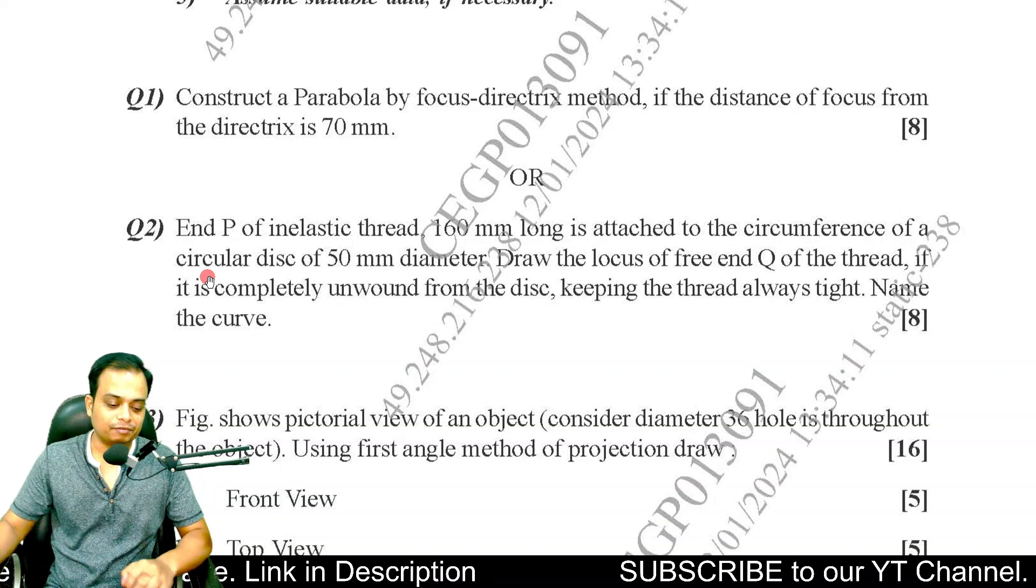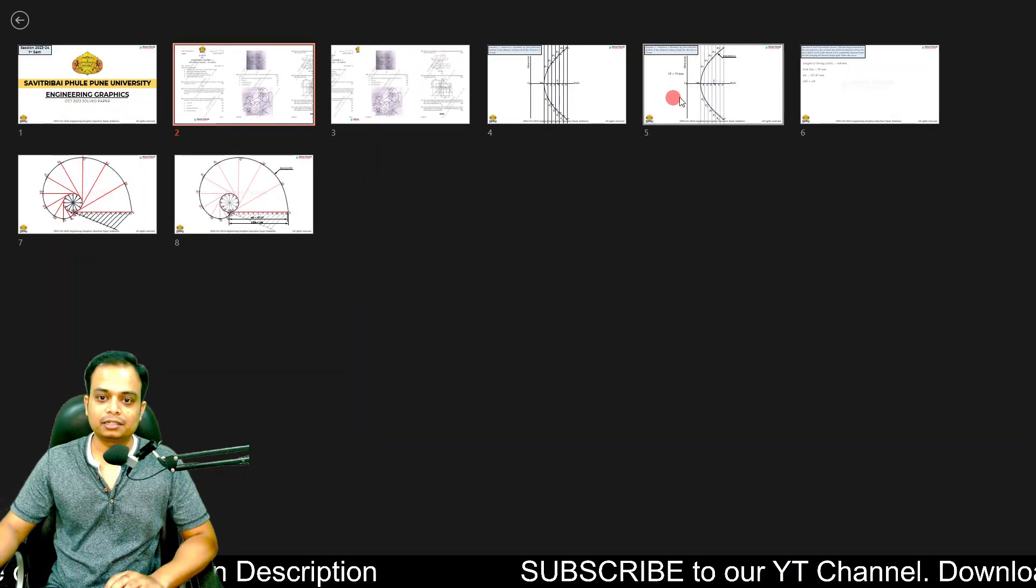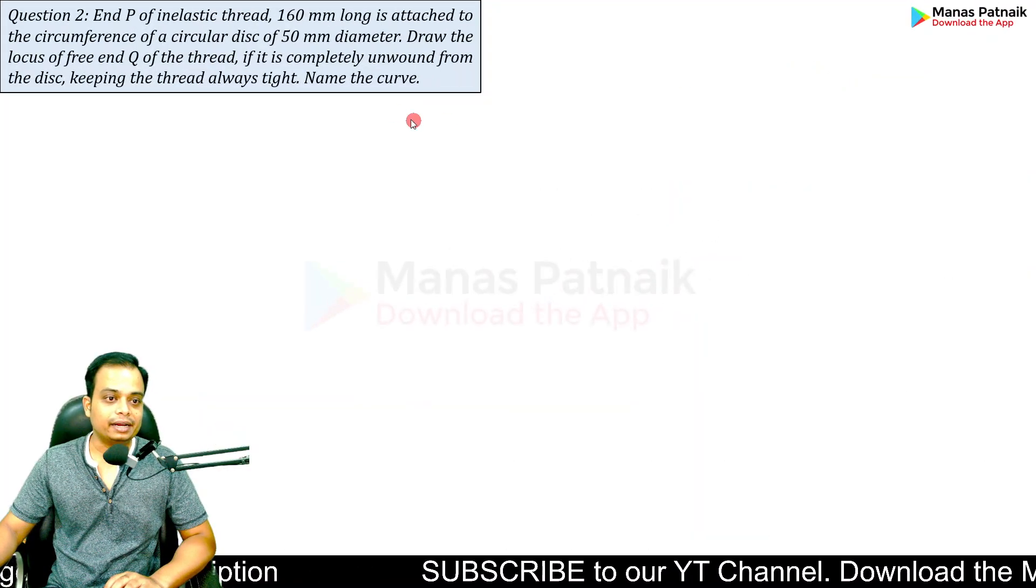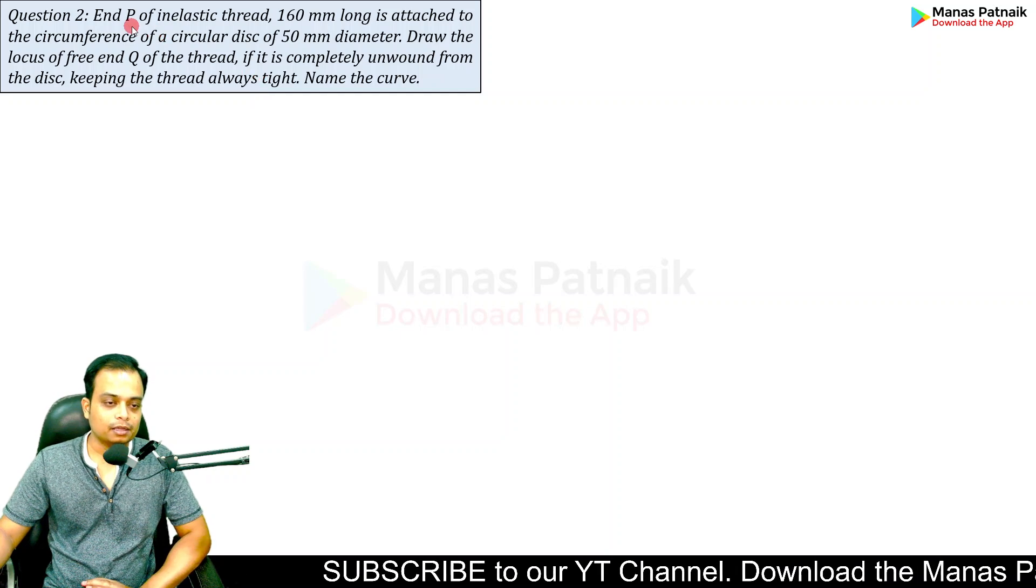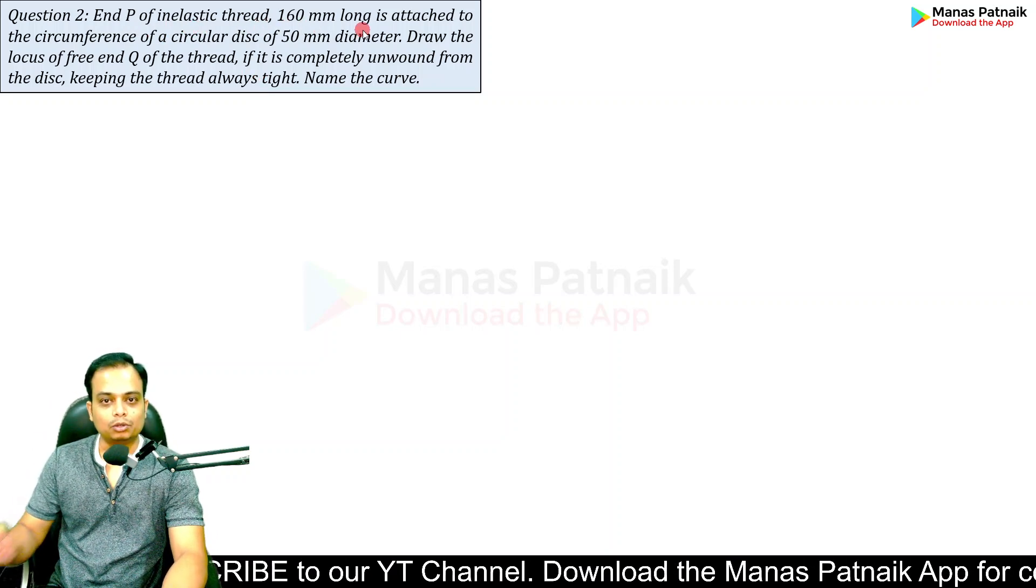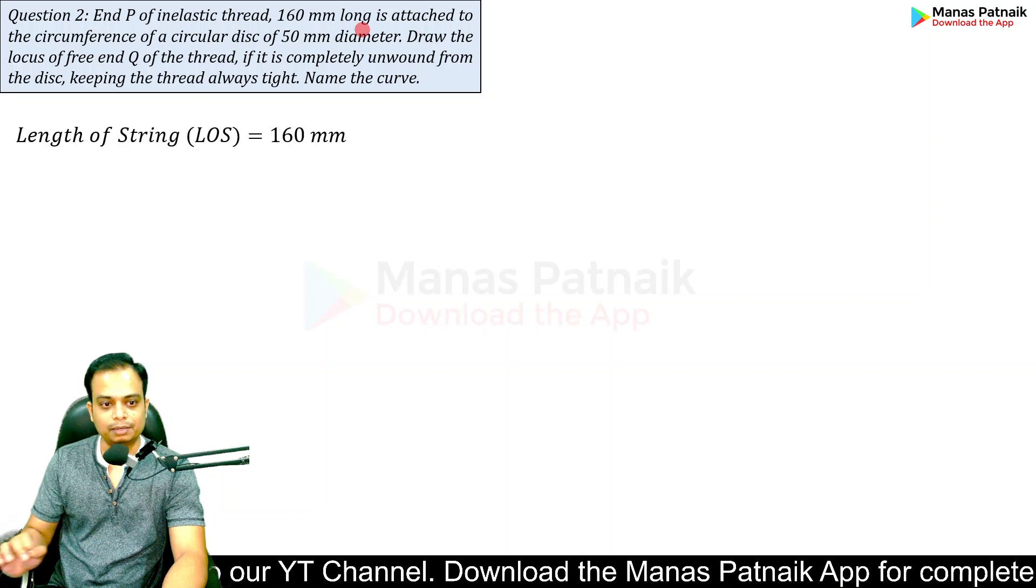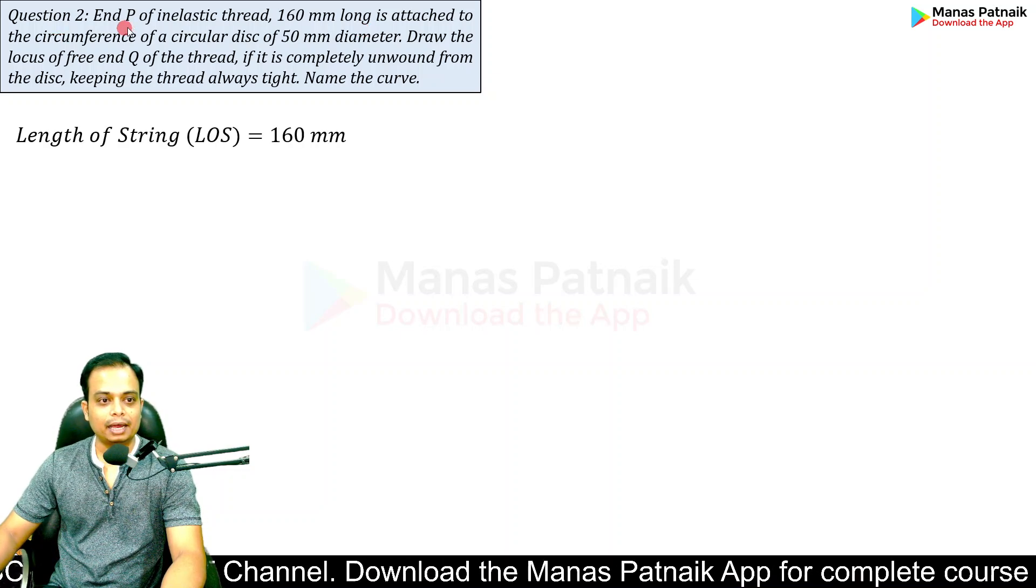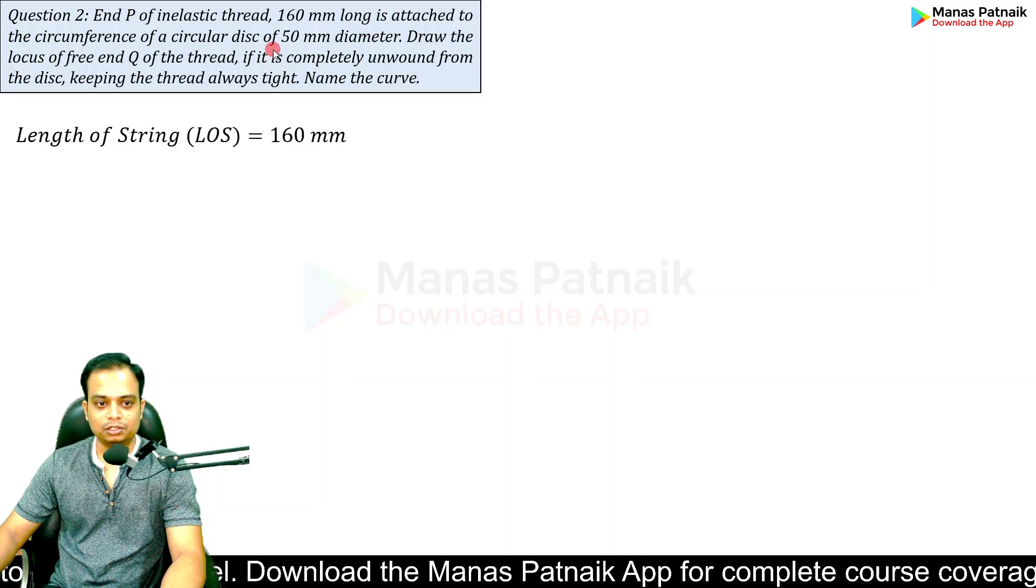It would be better if we can just start writing down the details given in the problem. End P of an inelastic string is 160 millimeters long, so length of string (LOS) is 160. Secondly, end P is attached to the circumference of a circular disc having 50 millimeter diameter.